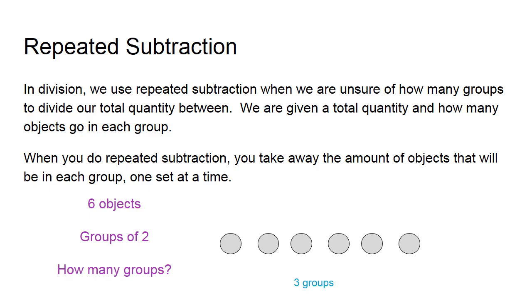The example we're going to look at is 6 objects. I'm going to give them away in groups of 2. How many groups am I going to have? To do this the first time, I'm going to circle a group of 2.